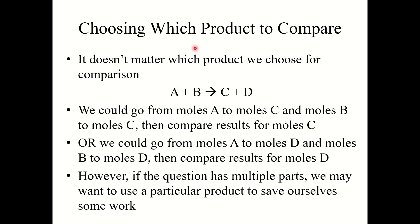Let's address choosing which product to compare. It actually really doesn't matter. So if I have a reaction AB plus CD, I could convert moles A to moles C and moles B to moles C and compare results, or convert them both to moles D. All that matters is we need to make sure we are converting both reactants to the same product. When determining who the limiting reactant is, it does not matter which product you choose, as long as you convert both reactants to the same product.